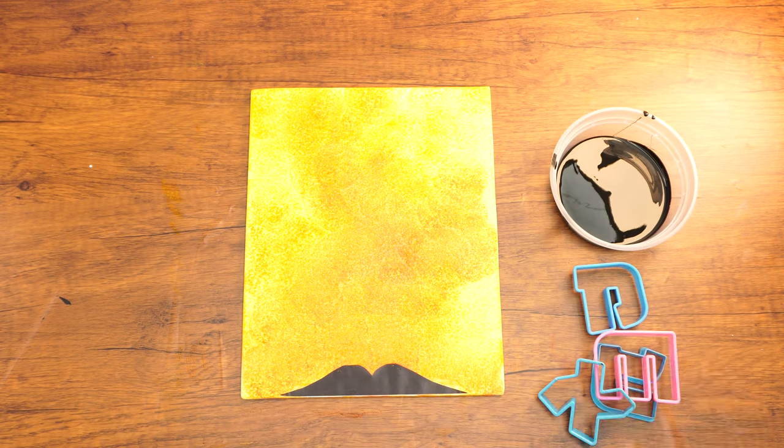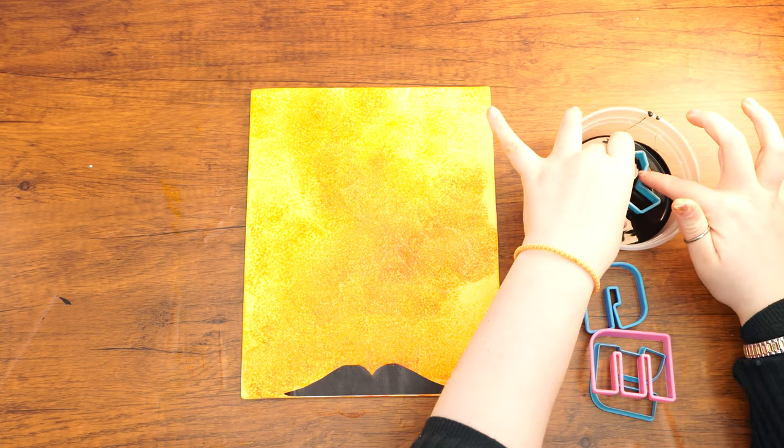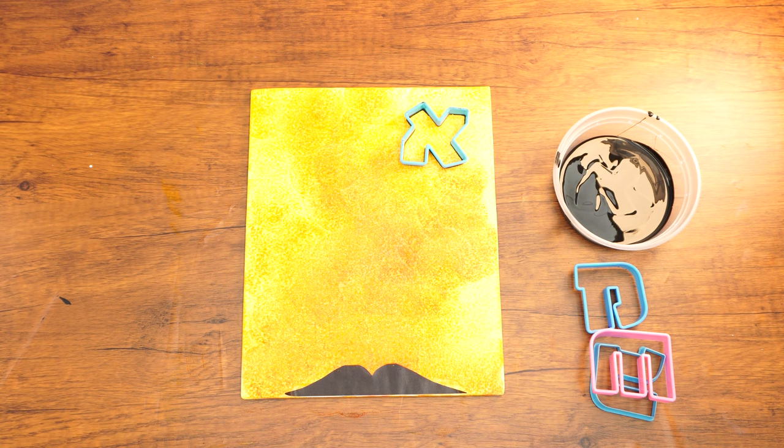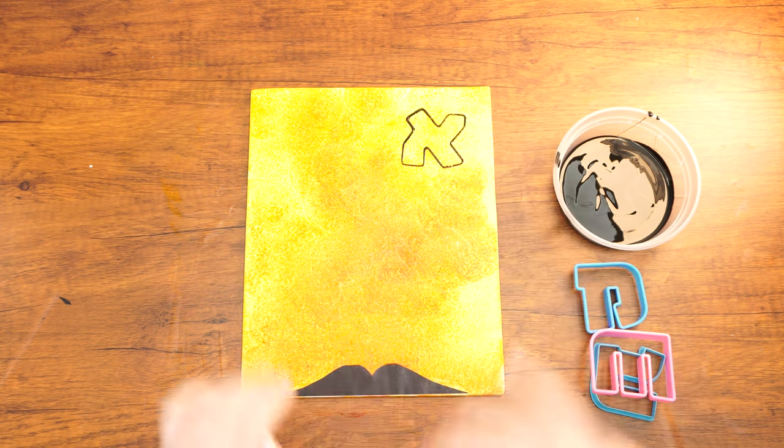Dip an Aleph-bet cookie cutter into the black paint and carefully stamp it onto the canvas. Think about where you want to place it down. Do the same with the other cookie cutters for however many letters you will include in your painting.